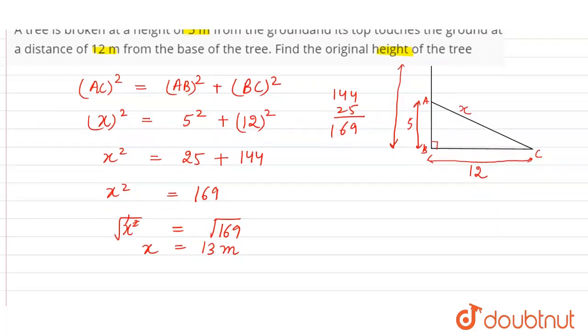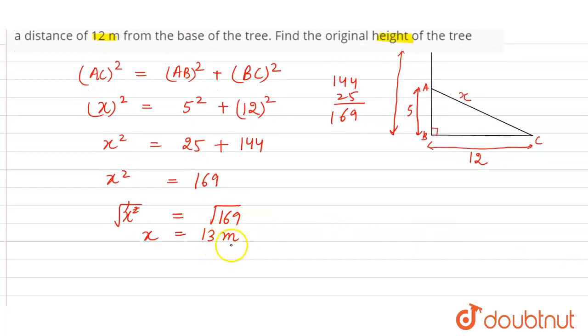So the part that fell on the ground is 13 meter. The original height will equal AB plus AD. Let's take the original height as BD, so BD equals AB plus AD. AD is x here and AB equals 5 meter.